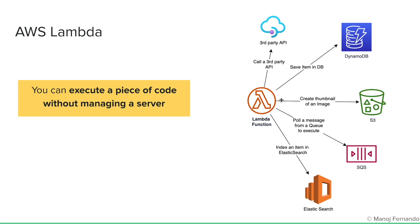Here's another example. Imagine someone adds some data into a DynamoDB table, and the DynamoDB table will send that data into a DynamoDB stream. We can write a Lambda function to listen to this stream and get this data — probably to index it in an Elasticsearch. The idea is that a Lambda function can be any piece of code that you want to run without managing a server.